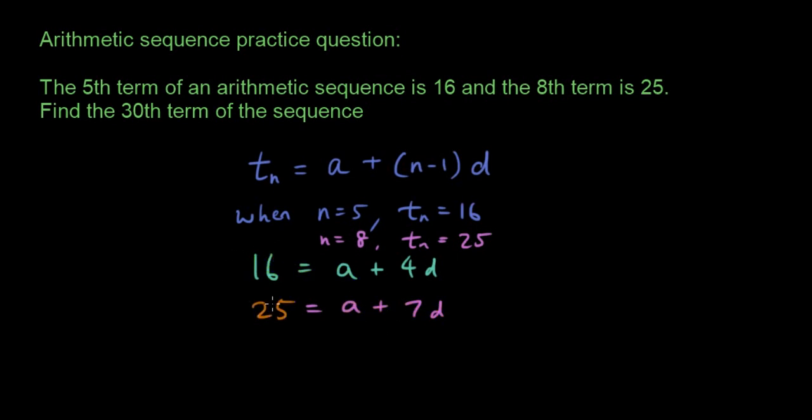So now we have two equations where a and d are the unknown variables. Two equations, two unknown variables. So this is equation 1 and this is equation 2. And we can probably solve it by doing a simple equation 2 minus equation 1. And we'll end up with 25 minus 16 is 9 equals a minus a is gone, 7 minus 4 is 3d. So d is equal to 9 over 3, which is just 3. D is equal to 3.